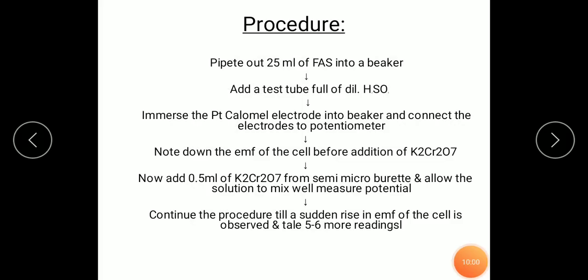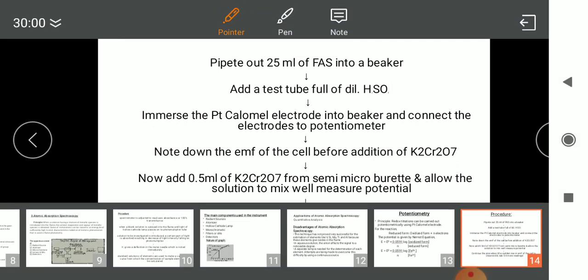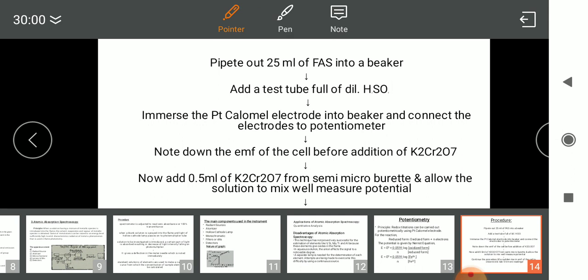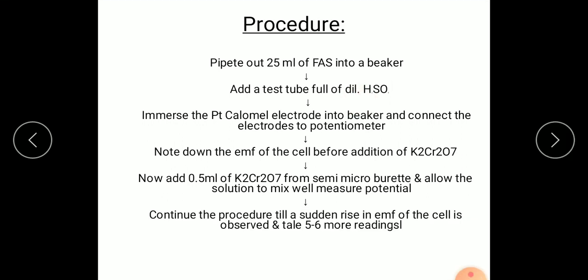Now we will study the procedure. First you need to take 25 ml of FAS with the help of pipet into the beaker. Pipet out 25 ml of FAS into beaker and then add one full test tube of dilute H2SO4 and fill the burette with K2Cr2O7. K2Cr2O7 is a strong oxidizing agent in presence of acidic medium. To maintain acidic medium you are using H2SO4 in the beaker.